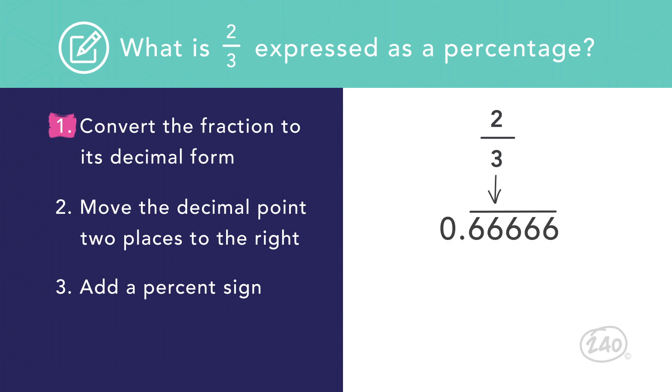Now that we have a decimal, we can convert it to a percentage the same way as before. Move the decimal point twice to the right and round as needed. Now we see that two thirds is approximately equal to sixty six point six seven percent.